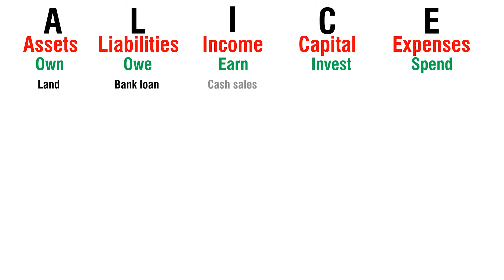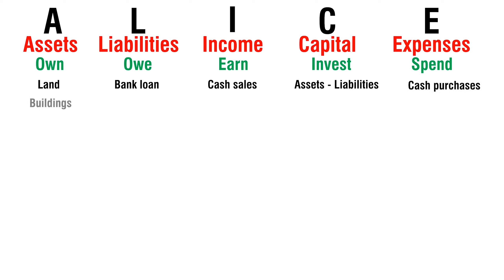Cash sales — earn. Assets minus liabilities — invest. Cash purchases — spend. Buildings — own. Mortgage — owe. Credit sales — earn. Cash at start — invest.